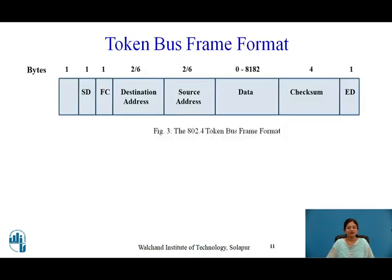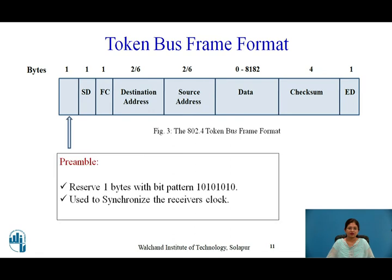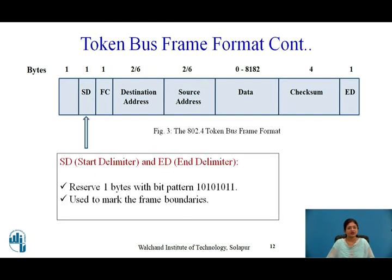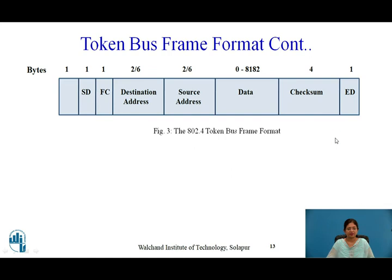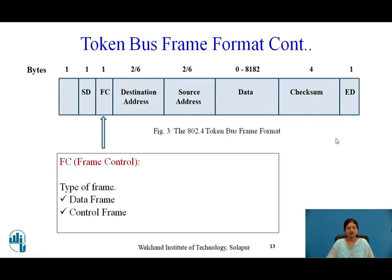Now let's look at the Token Bus frame format. The first field is the preamble — one byte with the bit pattern 10101010 — used to synchronize the receiver's clock. The next fields are the start delimiter and end delimiter, each one byte with the bit pattern 10101011, used to mark frame boundaries. The frame control field is used to differentiate control frames from data frames.